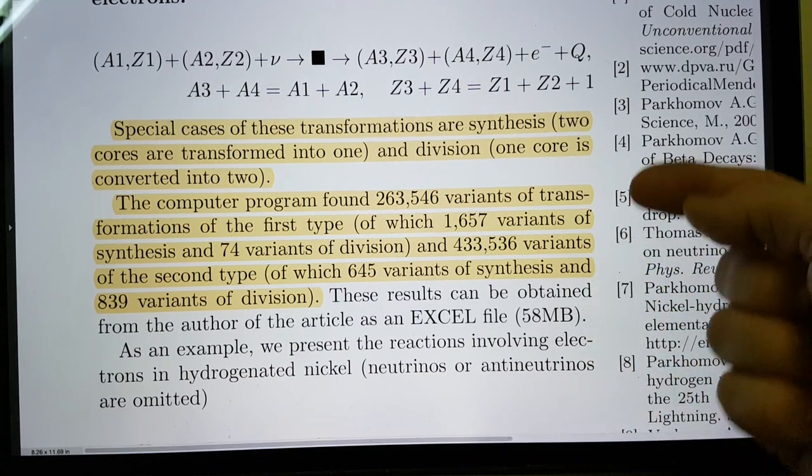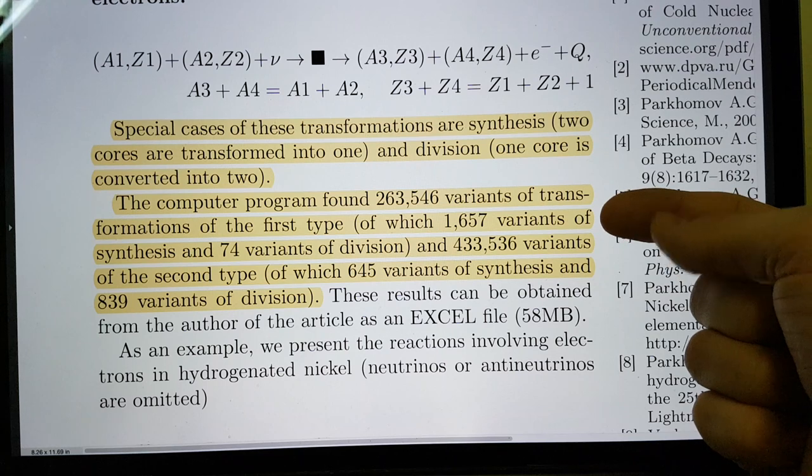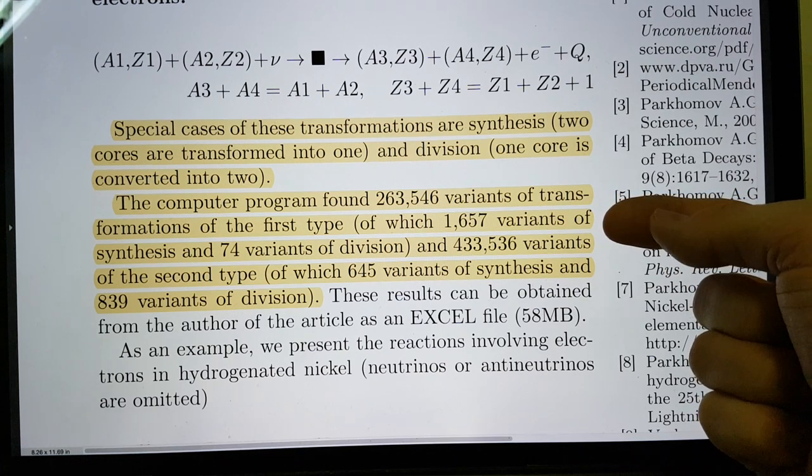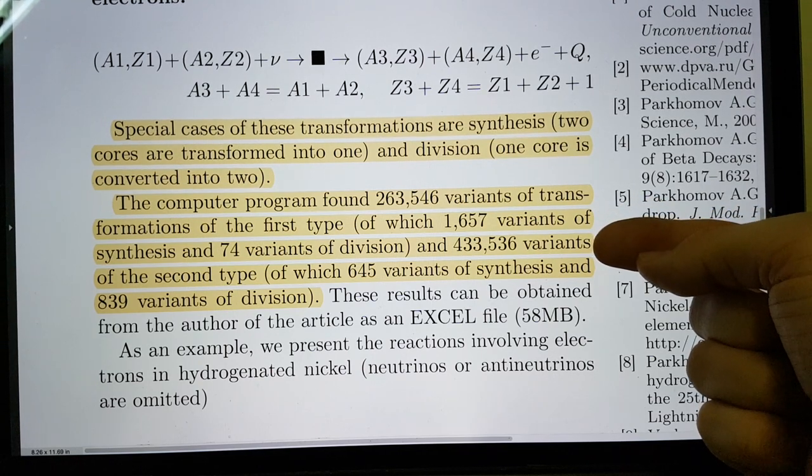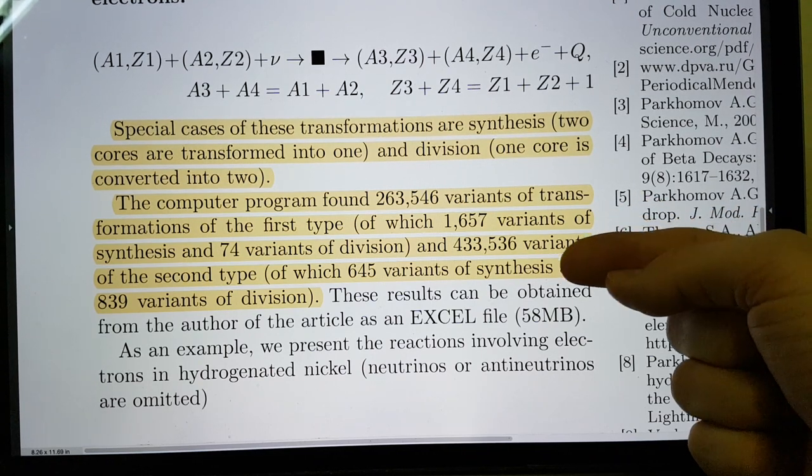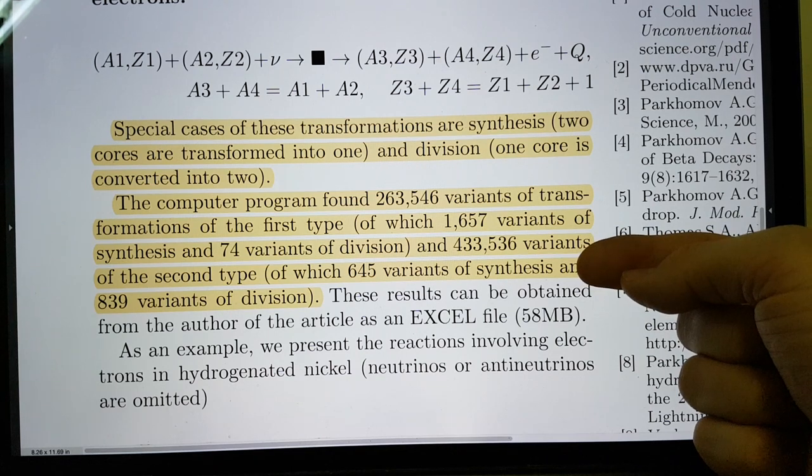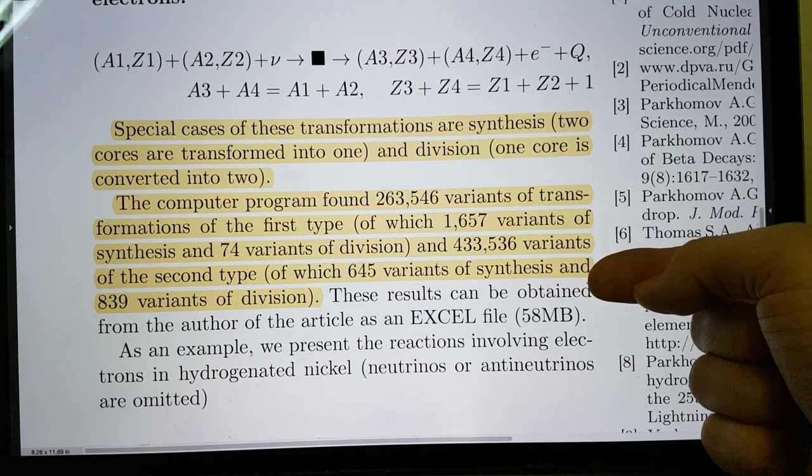The computer program found 263,546 variants of transformations of the first type of which 1,657 variants of synthesis and 74 variants of division. And 433,536 variants of the second type. Wow.